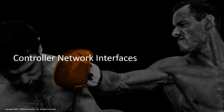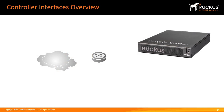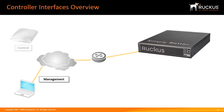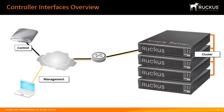SmartZone controllers communicate over network interfaces that are dedicated to specific communication types. They are found in the graphical user interface under the cluster settings and are collectively known as the cluster planes. The four interfaces are: management, control, clustering, and data.